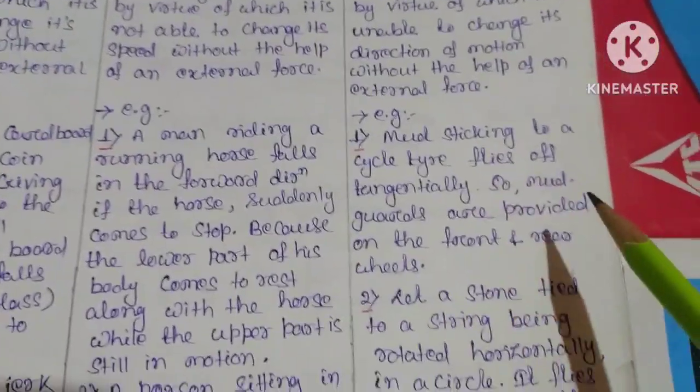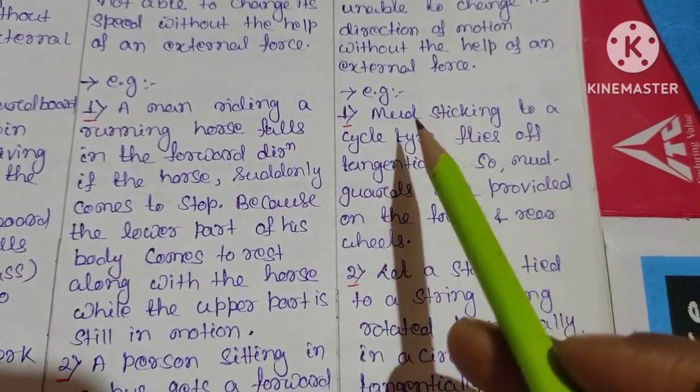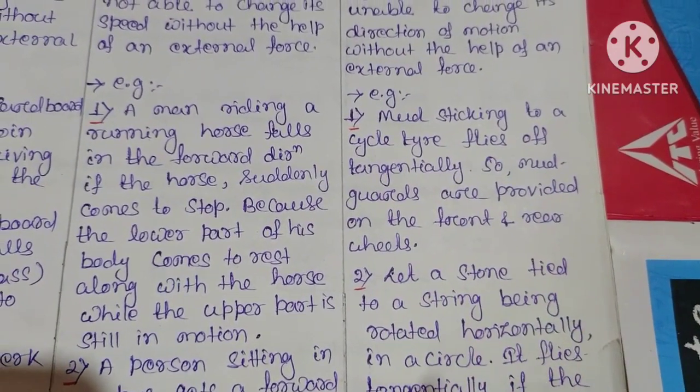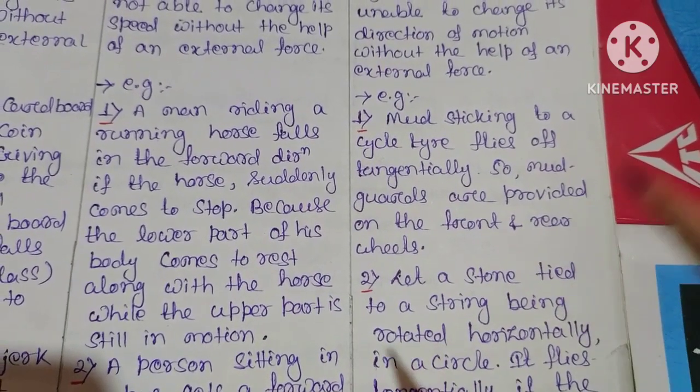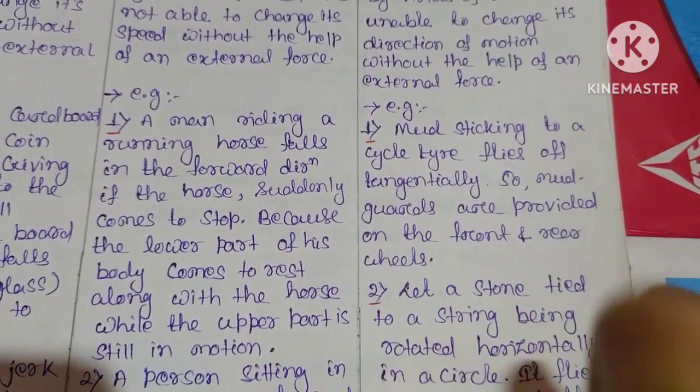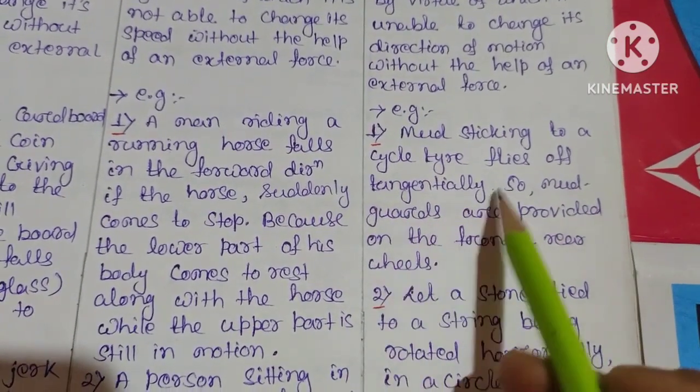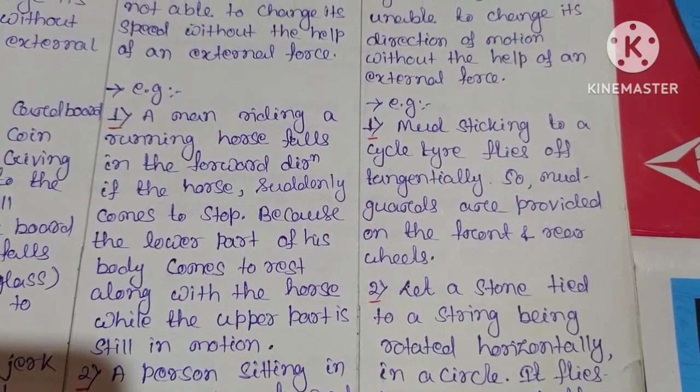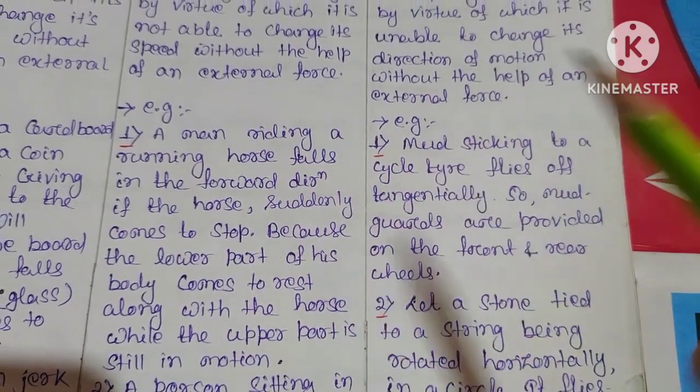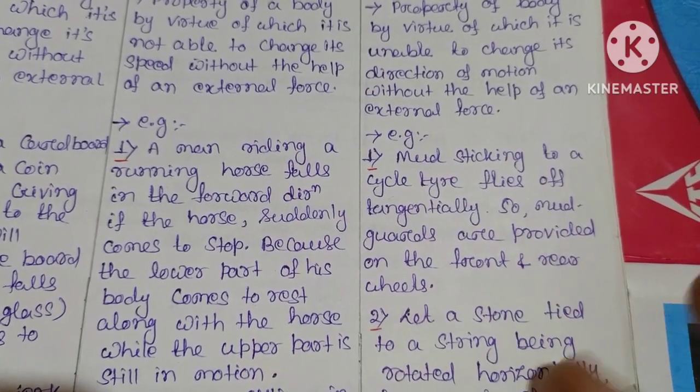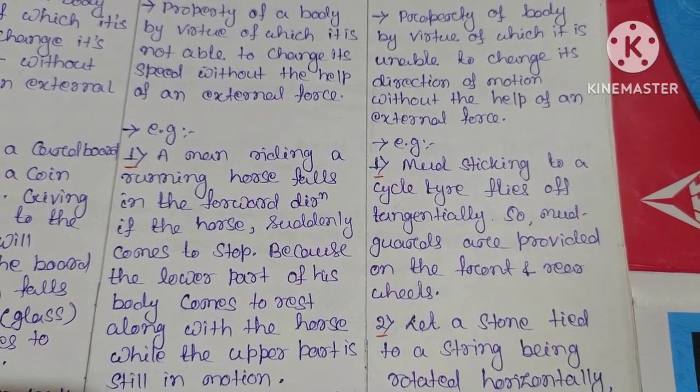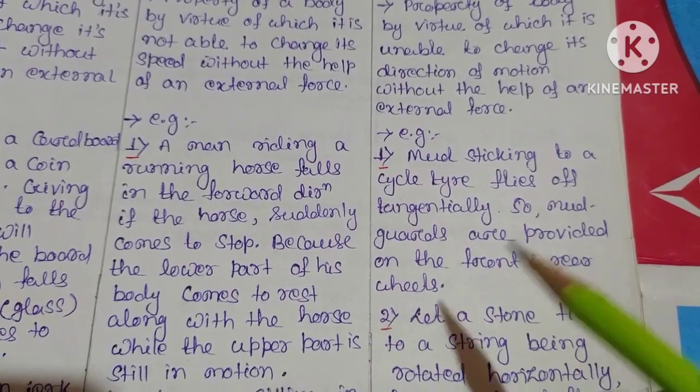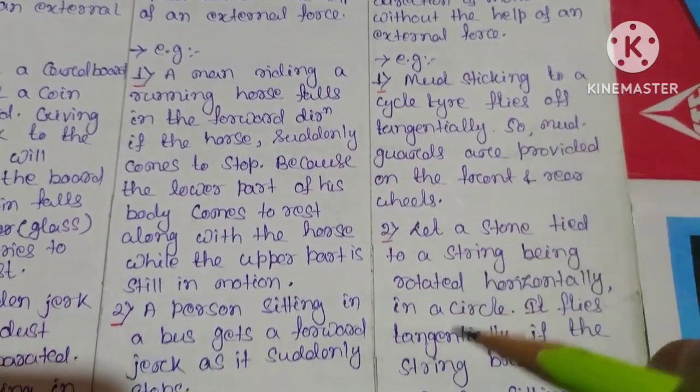What is inertia of direction? Mud sticking to a cycle tire flies off tangentially. Mud guards are provided on the front and rear wheels. This is the example of inertia of direction.